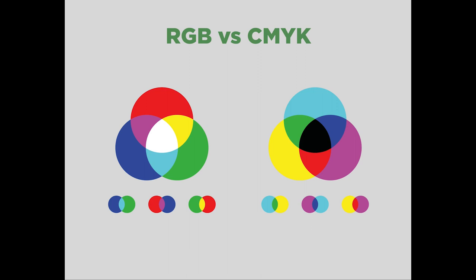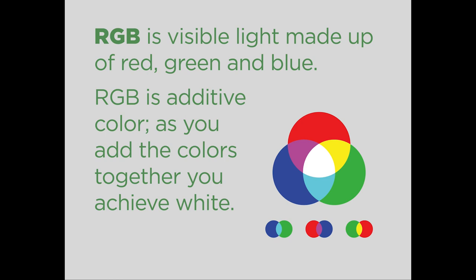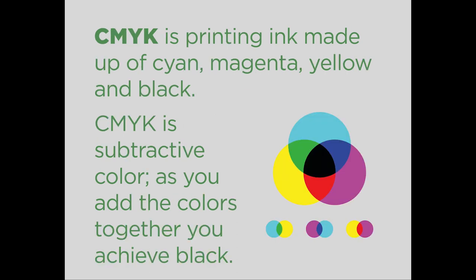Now let's talk about RGB versus CMYK color modes. RGB — red, green, blue — is the visible spectrum of light. RGB is called an additive color because as you add red, green, and blue together in equal amounts at full intensity, you get white as a result. CMYK — cyan, magenta, yellow, and black — is all about printing. CMYK is subtractive: as you add cyan, magenta, yellow, and black together, you achieve total blackness, hence subtractive — you're taking color away. RGB and CMYK are two absolutely opposite color modes and work exactly opposite of each other.